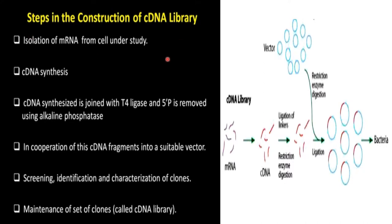Now the steps involved in the construction of a cDNA library: the synthesized cDNA is joined with T4 ligase and the 5' phosphate is removed using alkaline phosphatase. This cDNA fragment is then incorporated into a suitable vector, followed by screening, identification, and characterization of the clones. The maintained set of clones is called the cDNA library.